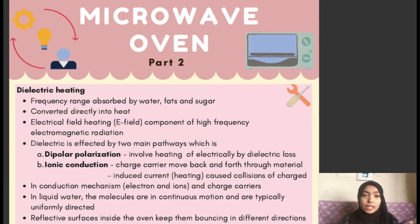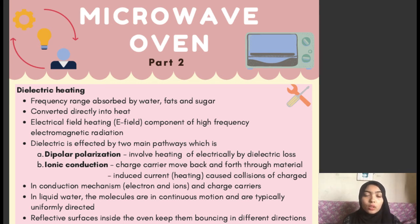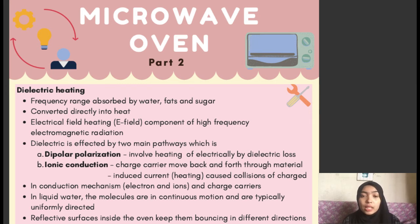Furthermore, the food inside the microwave continuously rotates in a circular motion to ensure even heating. Microwave ovens selectively heat liquid, known as water. Most food, even dry food, contains water. Water is a polar molecule; in liquid water, the molecules are in constant motion and are normally randomly oriented. The microwaves inside the metal compartment of the oven bounce in various directions, with the reflective surface keeping them bouncing in different directions.